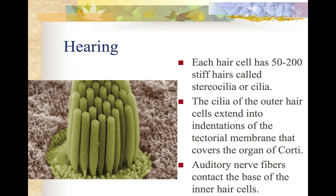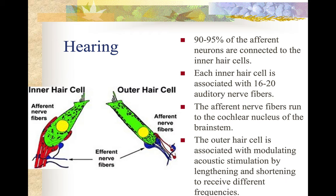Each hair cell has 50 to 200 stiff hairs called stereocilia. The cilia of the outer hair cell extend into the indentations of the tectorial membrane that covers the organ of Corti. The auditory nerve fibers can contact the base of the inner hair cells. 90 to 95 percent of afferent neurons are connected to the inner hair cells. Each inner hair cell is associated with 16 to 20 auditory nerve fibers. The afferent nerve fibers run to the cochlear nucleus of the brain stem. The outer hair cell modulates acoustic stimulation by lengthening and shortening to receive different frequencies.